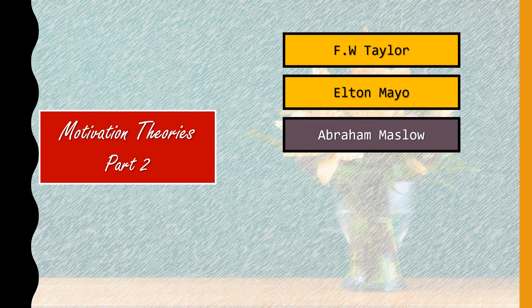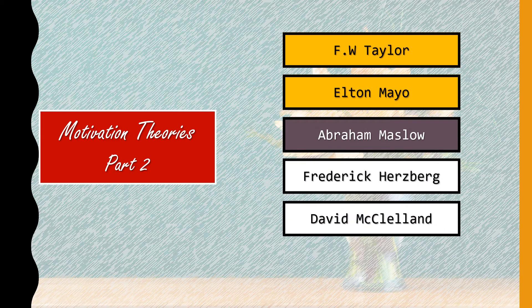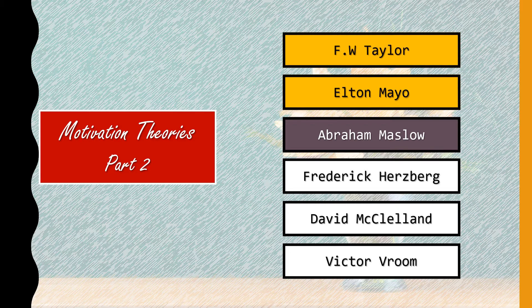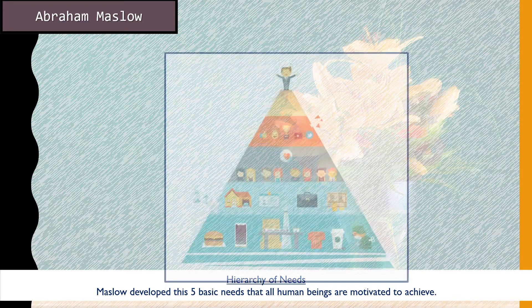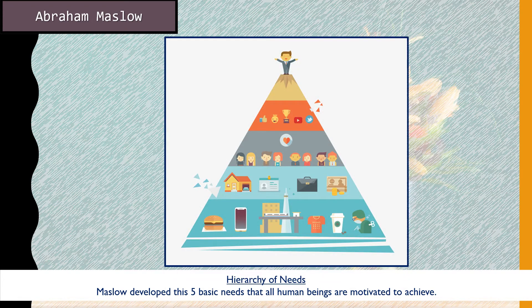Let's look at the list of researchers: Taylor, Mayo, Maslow, Herzberg, McClelland, and Vroom. We covered Taylor and Mayo in part one. Today we'll be looking at Maslow in part two. Maslow's hierarchy of needs consists of five basic needs that Maslow believes all human beings want to achieve one by one until they reach the peak of the pyramid.